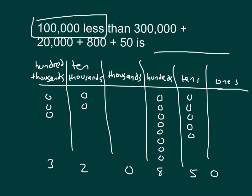But here we are going 100,000 less than 320,850, meaning we would have one fewer hundred thousand. So instead of having a 3 there, we actually have 200,000 there. The number we have then is 220,850 — that was 100,000 less than that number in expanded form.